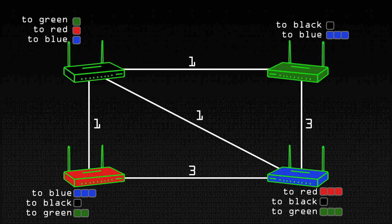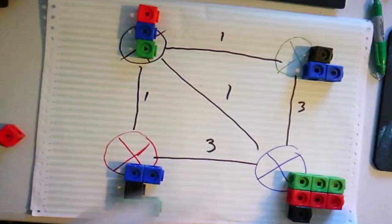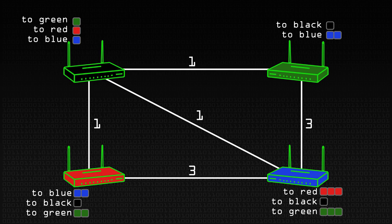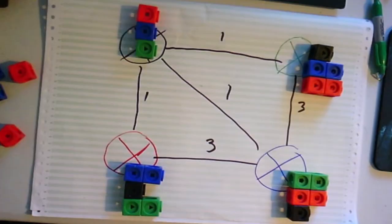That routing table also arrives with green. Green says: you can get to blue in one - brilliant, I've got a cheaper cost to blue. Green also hears for the first time about red - it can get to red at a cost of two. And when blue hears about the same routing table, blue has also got cheaper paths. Looking at that, we've now got the cheapest cost path for everything.